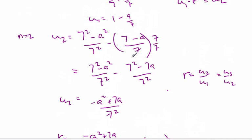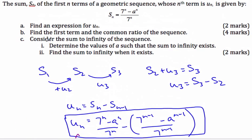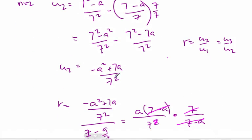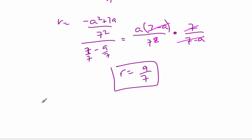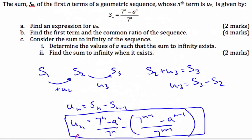So that completes Part B — we have U_1 and R. The last part asks us to determine the value of A such that the sum to infinity exists. For a sum to infinity to exist, the absolute value of R must be less than 1, so |A/7| must be less than 1, meaning A must be less than 7.